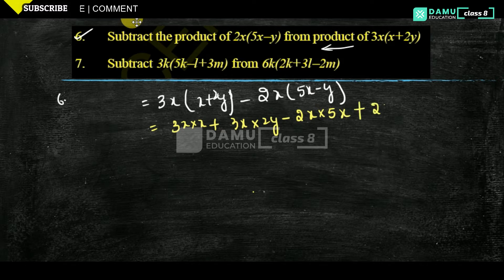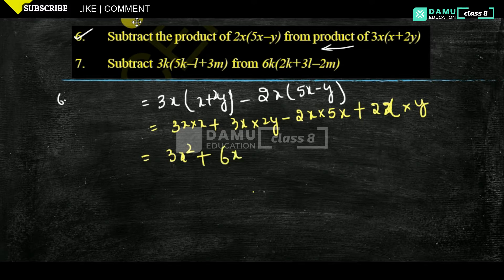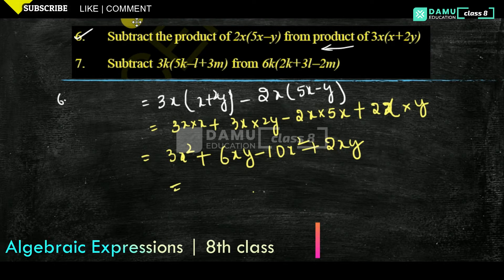Minus into minus will become plus, then 2x into y. So here: 3x into x gives 3x squared, plus 6xy — 3 threes are 6xy — minus 10x squared, and plus 2xy.